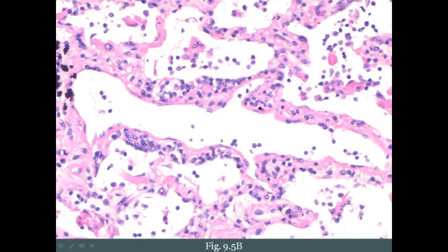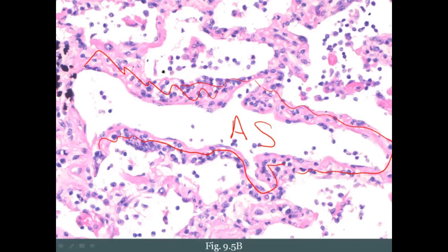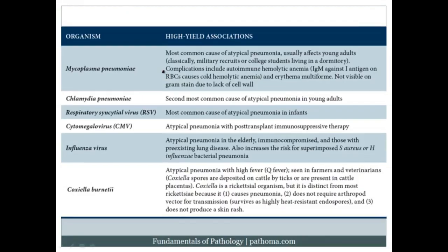On biopsy, interstitial pneumonia shows predominantly empty air sacs with few cells or exudate inside, but many inflammatory cells within the interstitial wall — producing the increased markings on X-ray. The organisms are also atypical. The most common cause of atypical pneumonia is Mycoplasma pneumoniae, usually affecting young adults — classically military recruits or college students in dorms. A high-yield complication is autoimmune hemolytic anemia via IgM cold agglutinins. Mycoplasma is not visible on gram stain because it lacks a cell wall.